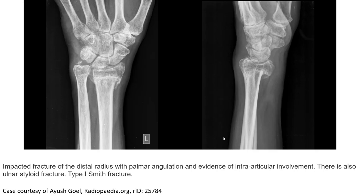This is an example case of Taiwan Smith fracture, where the film shows an impacted fracture of the two storages with palmar angulation and evidence of intra-articular involvement. There is also ulnar styloid fracture.